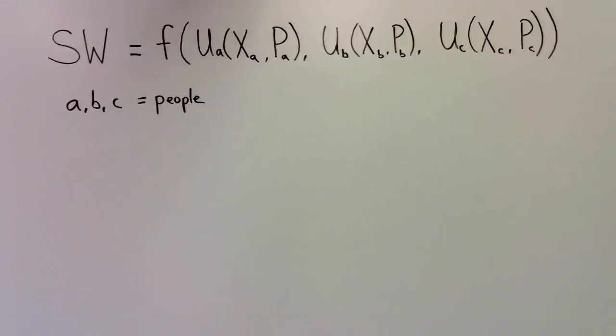Moreover, the utility of each of these people depends on X, how many goods each individual consumes, and P, how much pollution each individual endures. Next, we will make some assumptions about A, B, and C's utility functions.